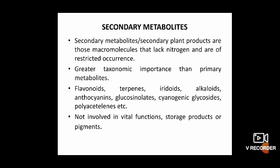Secondary metabolites, or secondary plant products, are those macromolecules that lack nitrogen and are of restricted occurrence, and therefore of greater taxonomic importance than primary metabolites. This group includes different kinds of compounds such as flavonoids, terpenes, iridoids, alkaloids, anthocyanins, glucosinolates, cyanogenic glucosides, polyacetylenes, etc. They are usually not involved in vital functions and are largely storage products or pigments.